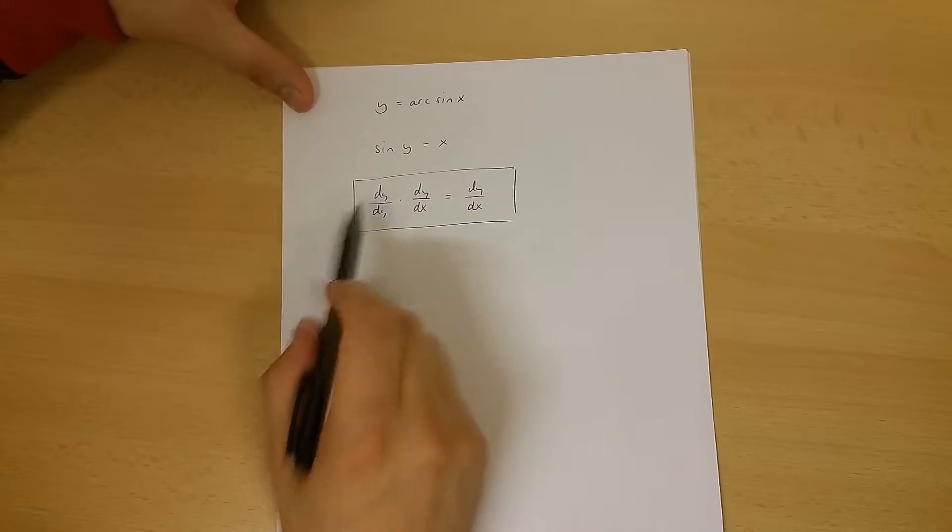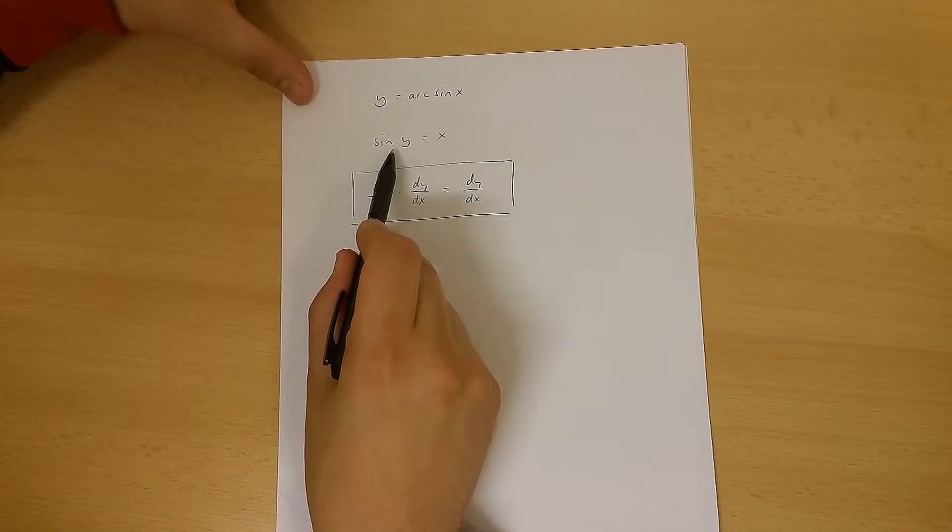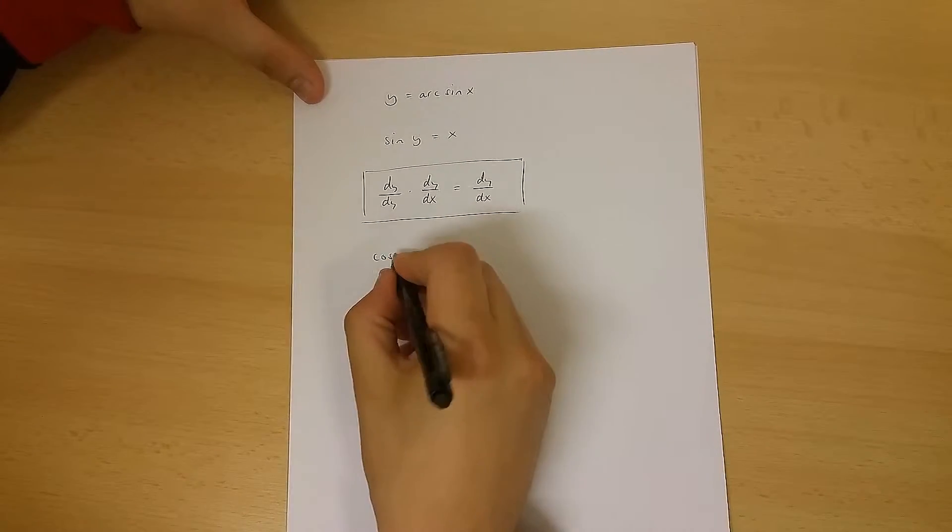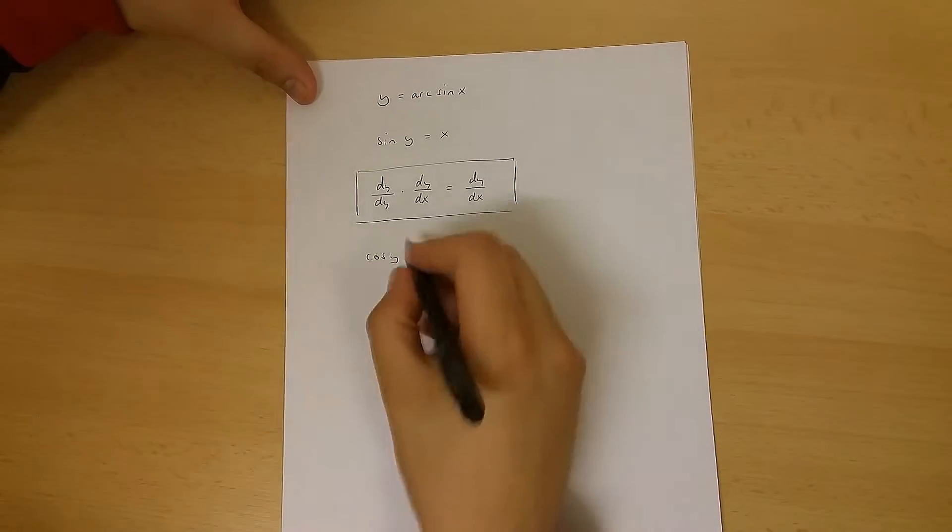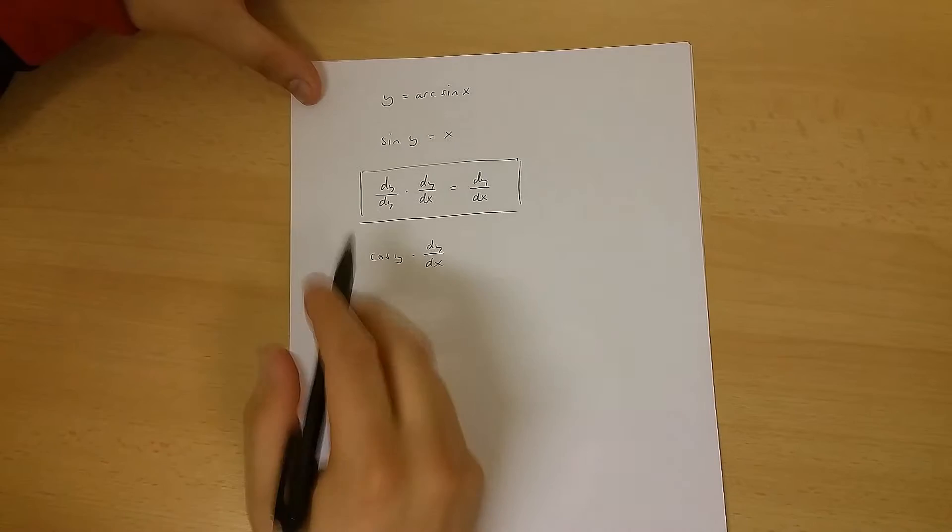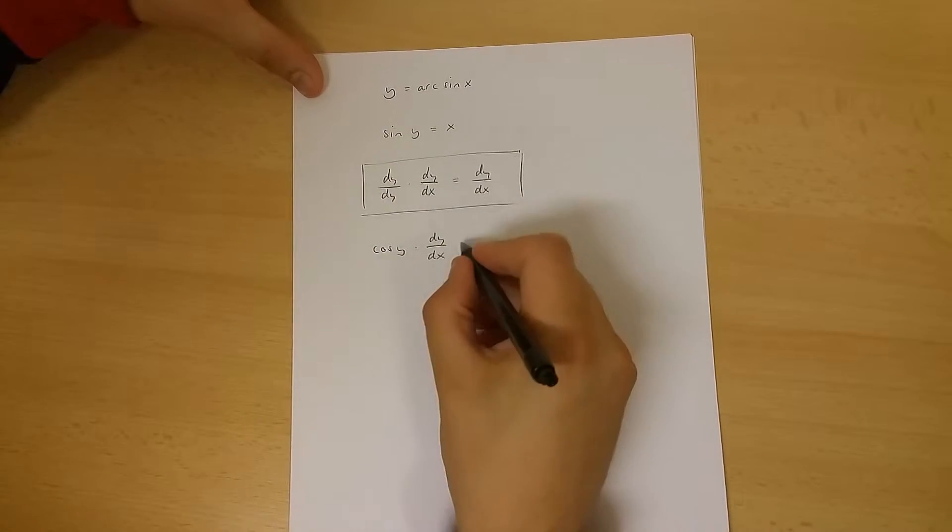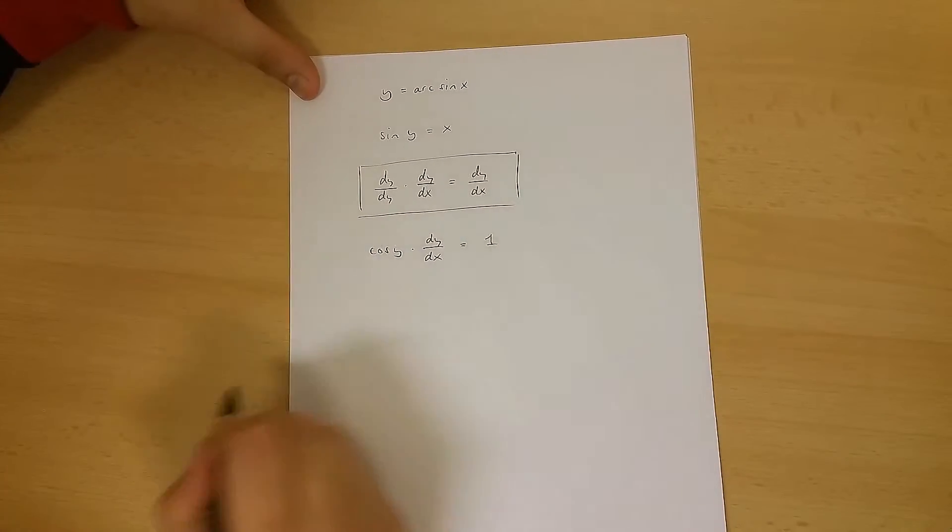Now d(sin y)/dy is equal to cos(y), so let's write cos(y) times dy/dx. We've differentiated the left side of the equation. Now x differentiated equals 1.